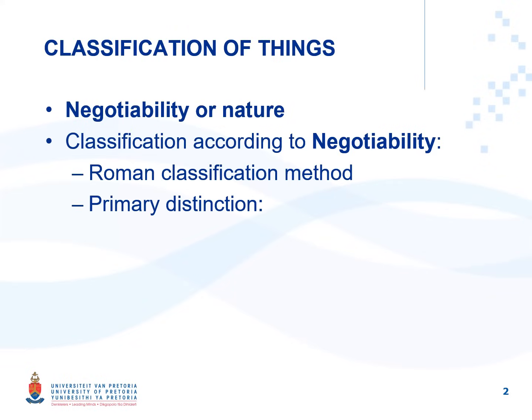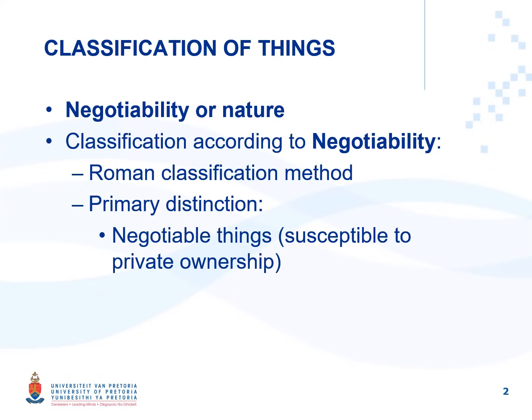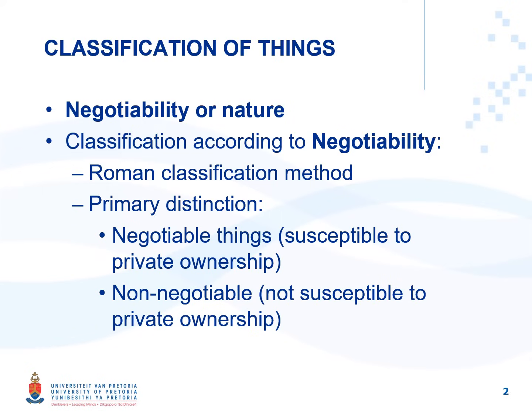The primary distinction drawn when we classify things according to negotiability is, first of all, is the thing a negotiable thing? In other words, is it susceptible to private ownership? If it is susceptible to private ownership, it is a negotiable thing. Or is it a non-negotiable thing — not susceptible to private ownership because it falls within the public sphere? If something falls within the public sphere and ownership cannot be acquired over it, it is a non-negotiable thing.